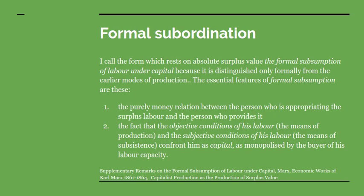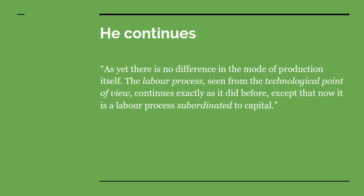What he's saying is that in the early stages, before the employment of machinery — say in the 1700s — people employed by capitalists were only formally subordinate to them. It was only a change in the social form of the labour; there's no change in the real mode of production. He continues: 'As yet, there is no difference in the mode of production itself. The labour process, seen from the technological point of view, continues exactly as it did before, except now that it is a labour process subordinated to capital.'